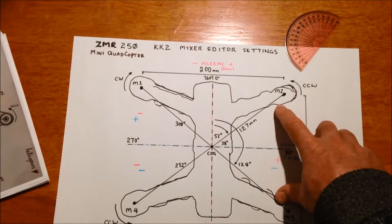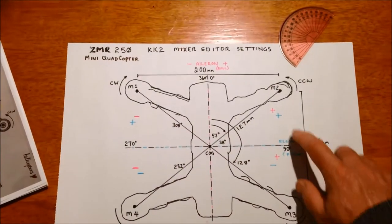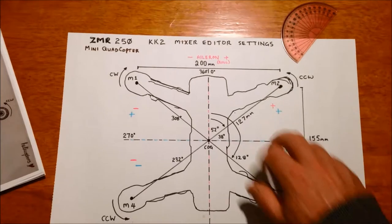You've got your length of your arms, got your aileron plus minus, elevator plus minus, pitch or roll.